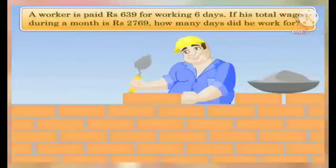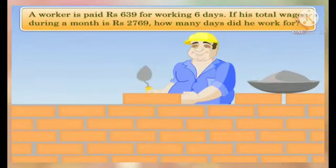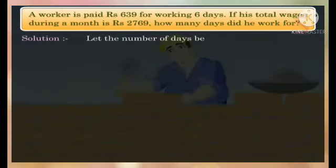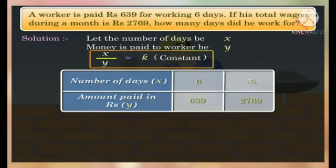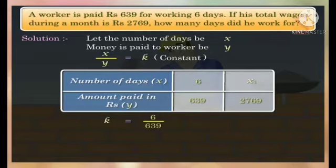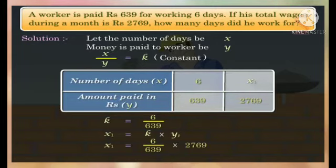A worker is paid Rs. 639 for working 6 days. If his total wages during a month are Rs. 2769, how many days did he work? Let the number of days be x and money earned be y. Then x and y are in direct proportion, so x/y = constant. We get k = 6/639. Using x1 = k×y1, with y1 = 2769 and k = 6/639, we get x1 = 26. So the worker worked for 26 days.